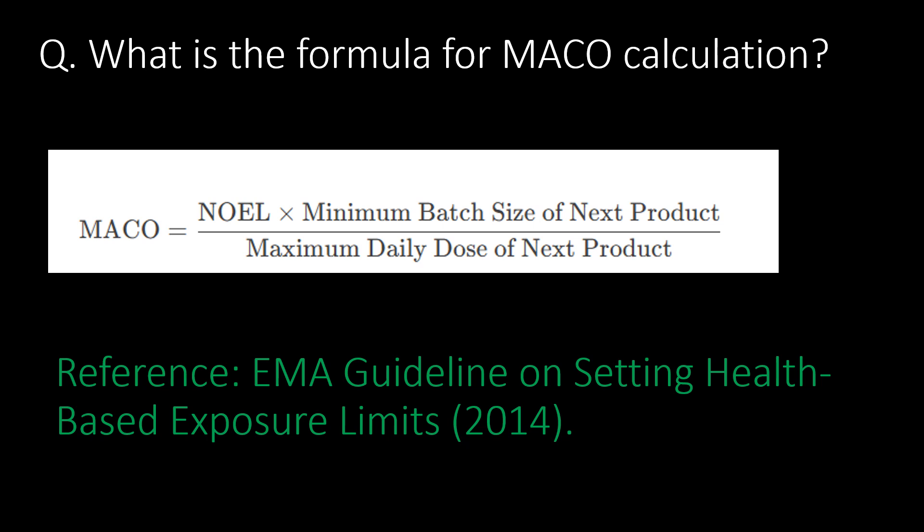What is the formula for MACO calculation? MACO equals NOEL (no observed effect level) multiplied by the minimum batch size of the next product, divided by the maximum daily dose of the next product. Reference: EMA guideline on setting health-based exposure limits, 2014.